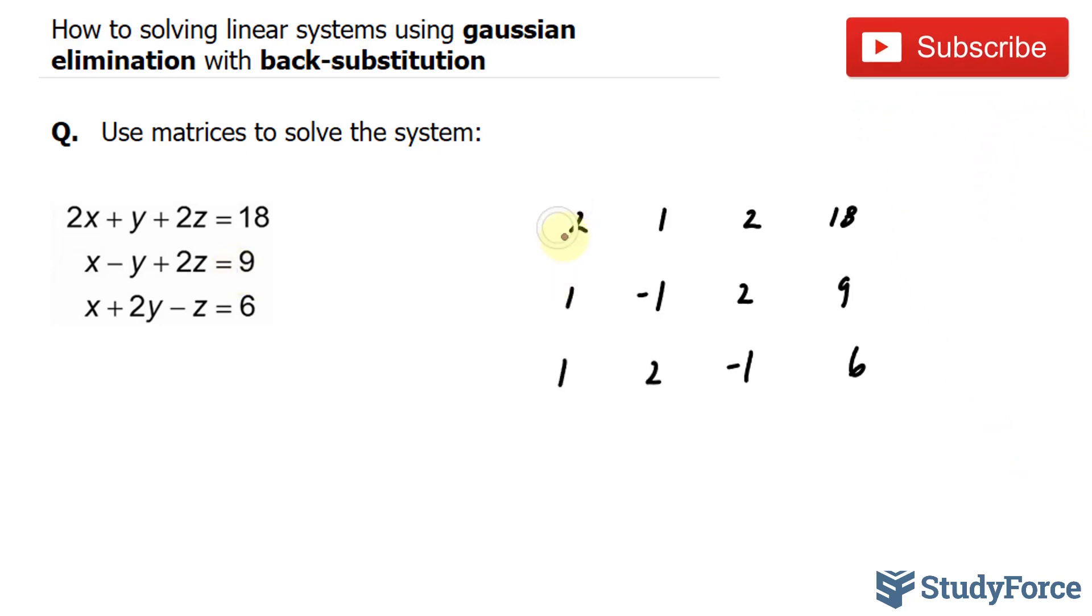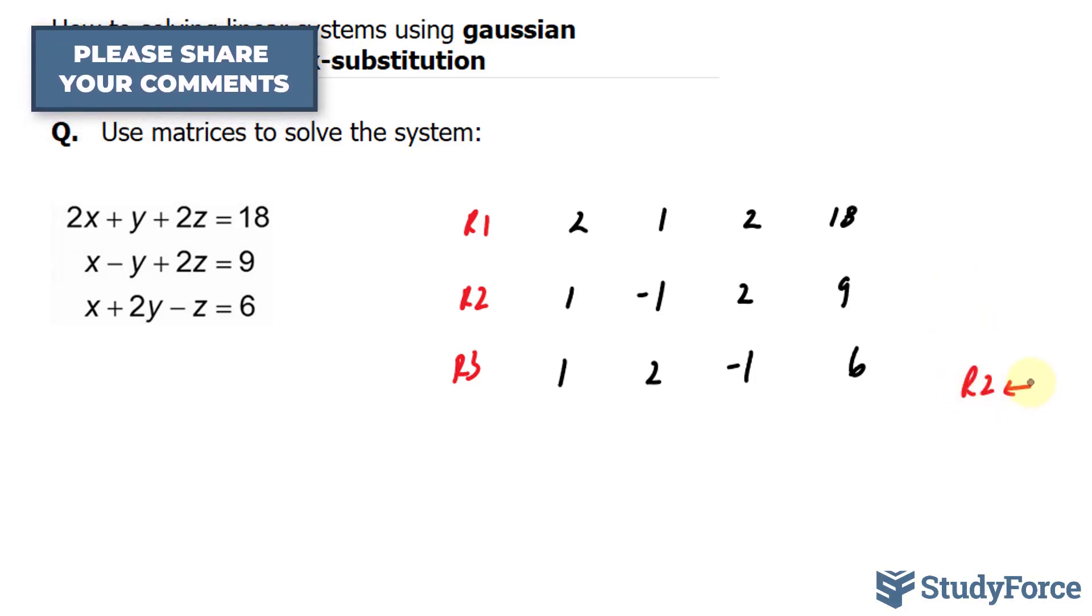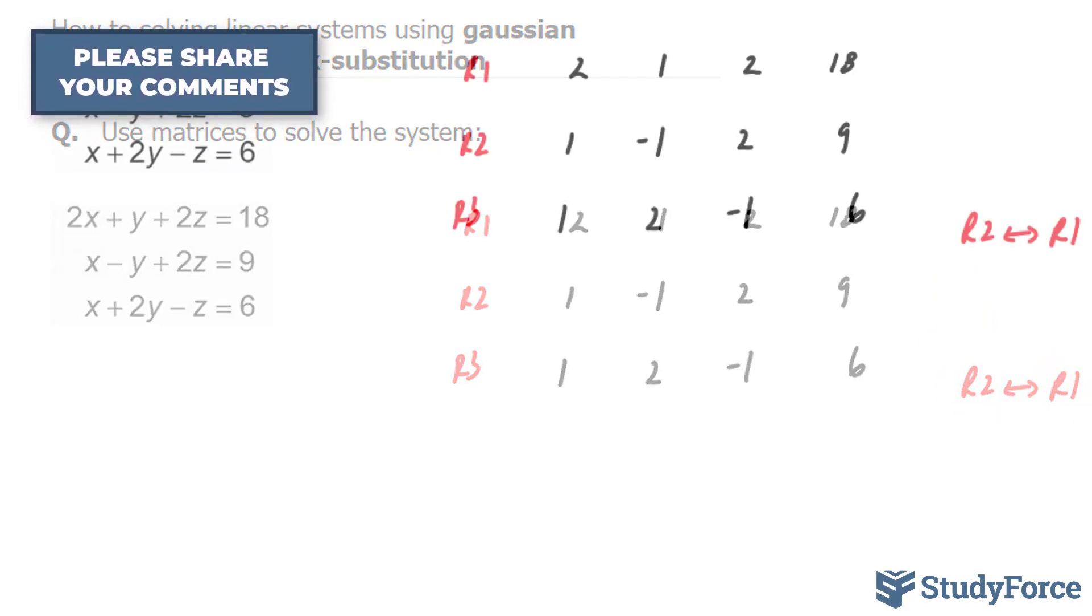So we want to make this 2 so that it's a 1. And one way we can do that is to switch row 1 with row 2. So this is row 1, row 2, and row 3. Row 2 and row 1 will be switched. So let's document that by writing row 2 to row 1. By doing this, your matrix should look like this.